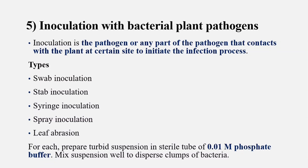The fifth step is the inoculation with bacterial plant pathogens. Inoculation is when the pathogen or pathogen part contacts with the plant at a certain site to initiate the infection process, so that the infection process can initiate.